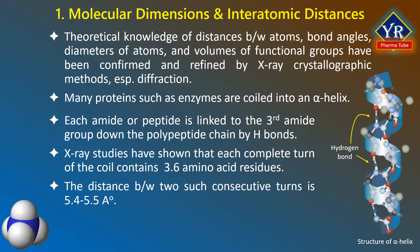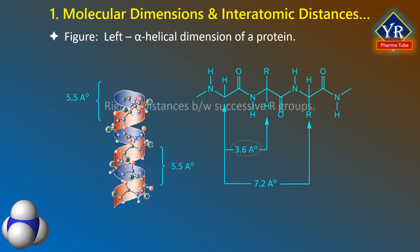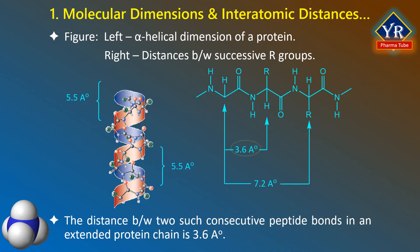The distance between two consecutive turns is 5.4 to 5.5 angstroms. Furthermore, the distance between two consecutive peptide bonds in an extended protein chain is 3.6 angstroms. It is now widely accepted that receptors that interact with drugs to produce a drug reaction are largely protein in nature. Thus, the two distances between helical turns and peptide bonds assume potential significance in the mechanism of action at the molecular level.